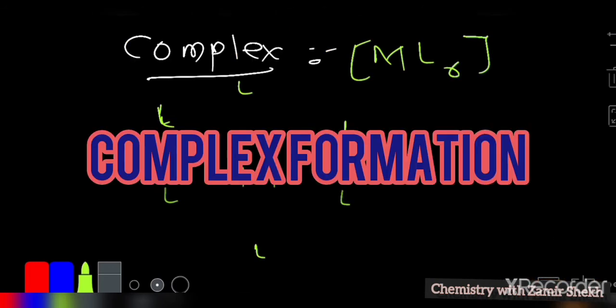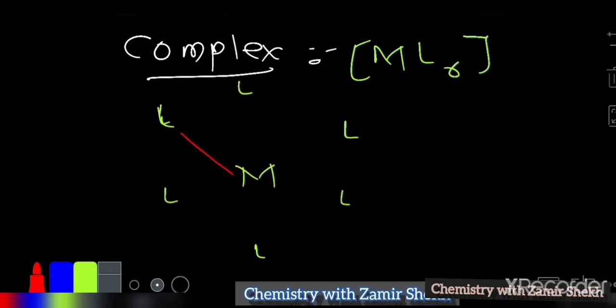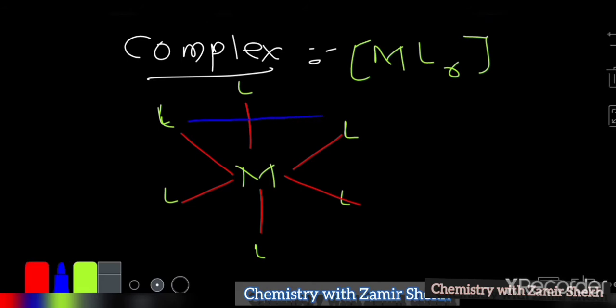An octahedral complex has six ligands coordinated to the central metal ion. The structure looks like this: four ligands form one plane, and two ligands are present at the axial positions.